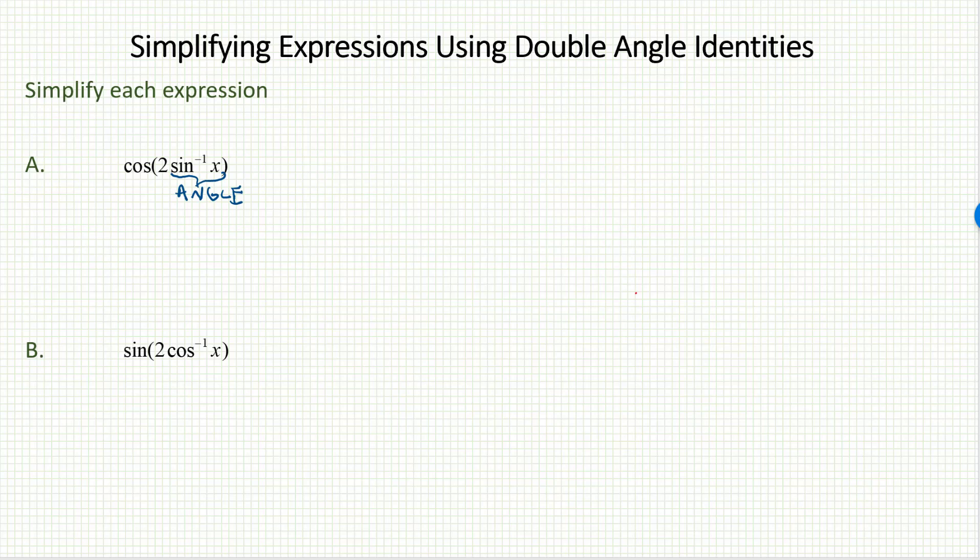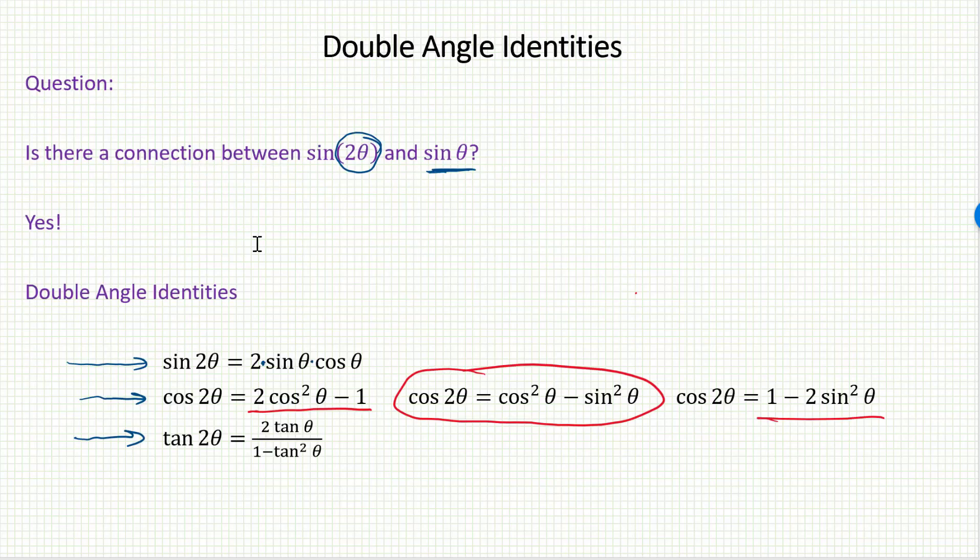Well, I can rewrite this then using one of the double angle identities for cosine. Now, that's the one where there were three choices. Three possible versions of the identity. So, which one should I use?